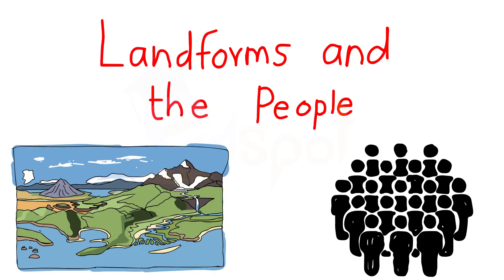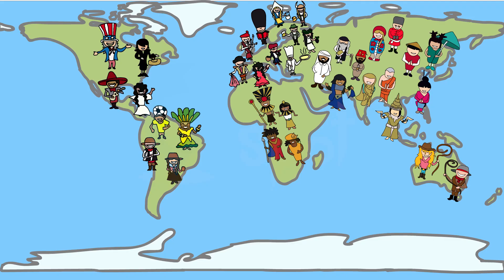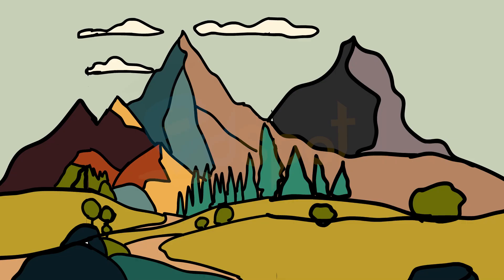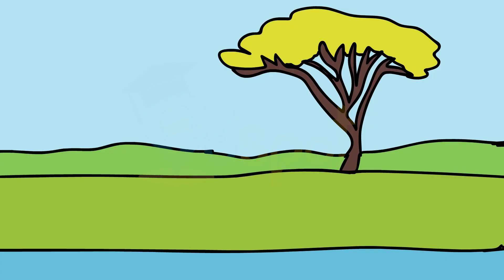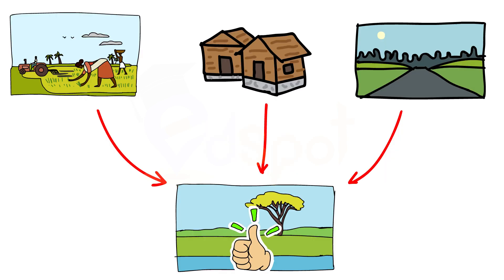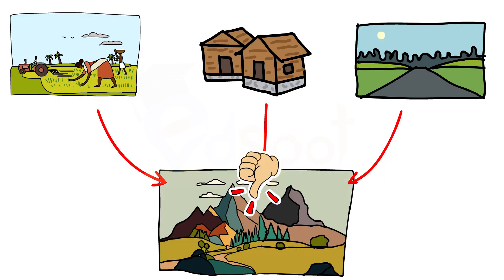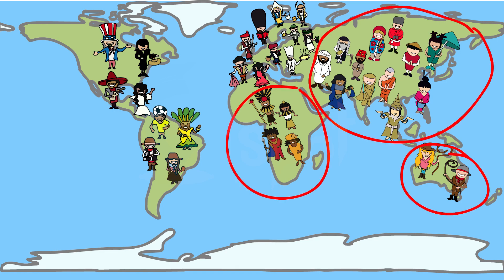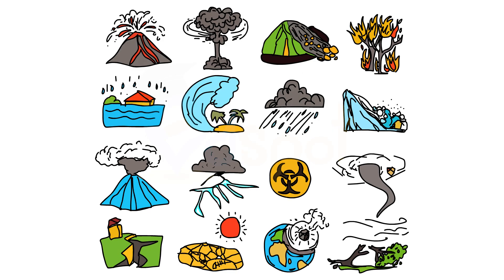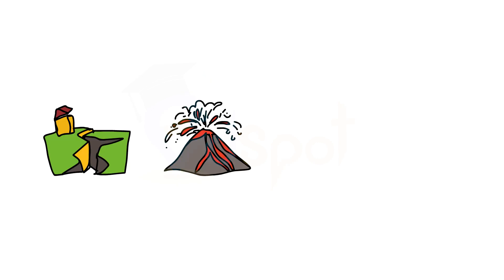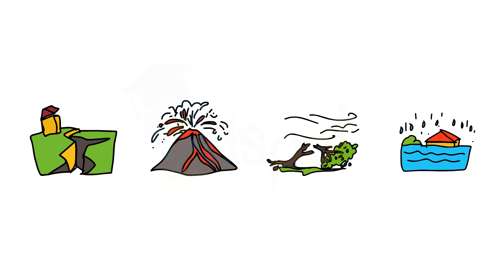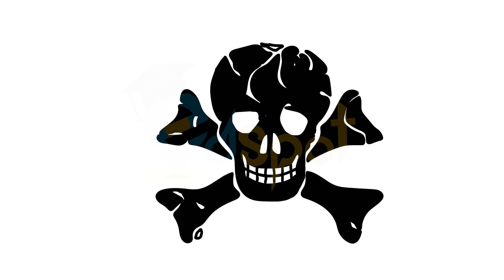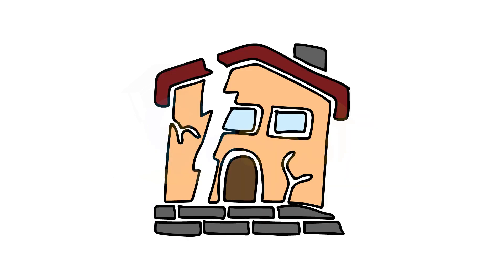In India too, the Indo-Gangetic plains are the most densely populated regions of the country. Humans have been living on different kinds of landforms in different ways. Life is difficult in mountainous areas — plains provide much better conditions. It is easy to grow crops, build a house, or a road in a plain than a mountain. Sometimes natural calamities such as earthquakes, volcanic eruptions, storms, and floods cause widespread destruction, with huge loss of life and property.